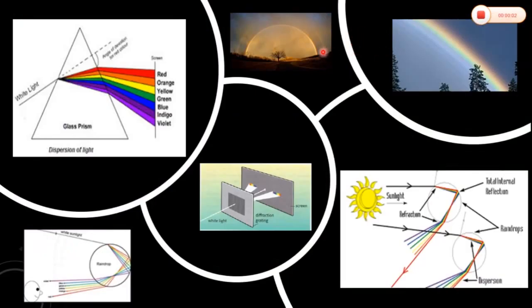The spectrum is a band of colors as seen in a rainbow, or the entire range of wavelengths, as light is separated into its components due to refraction or bending to different degrees based on each color's wavelength — either through a prism, through a diffraction grating, or through a water droplet in the atmosphere.